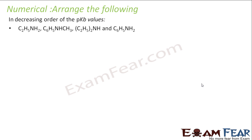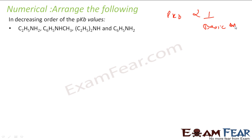Now we have to arrange compounds in decreasing order of pKb values. We know that pKb value is inversely proportional to basic strength. So let's first order the compounds in terms of basic strength and then reverse the order to get pKb.